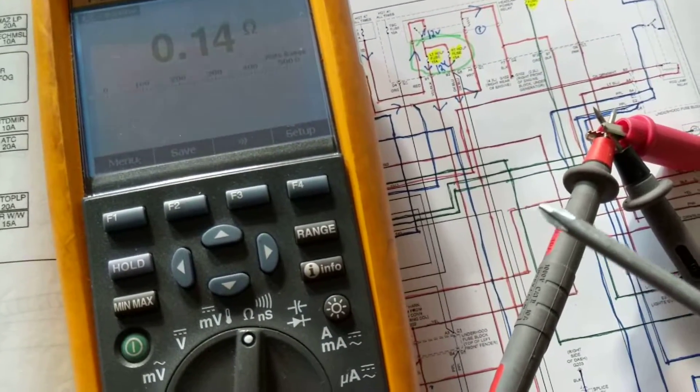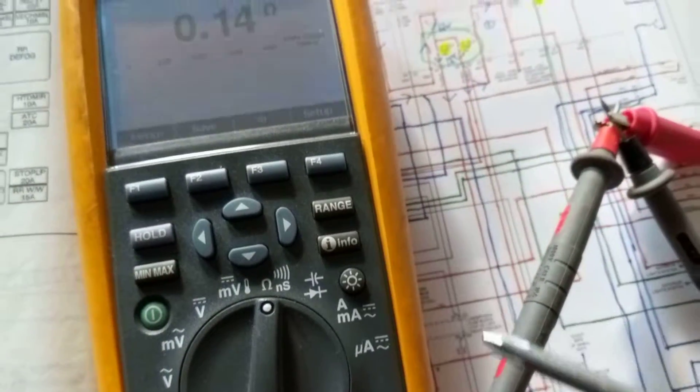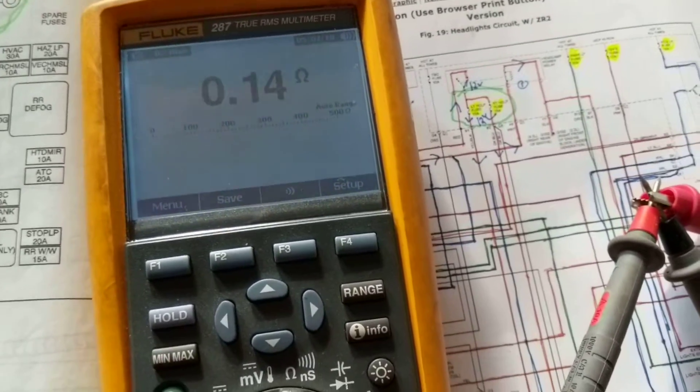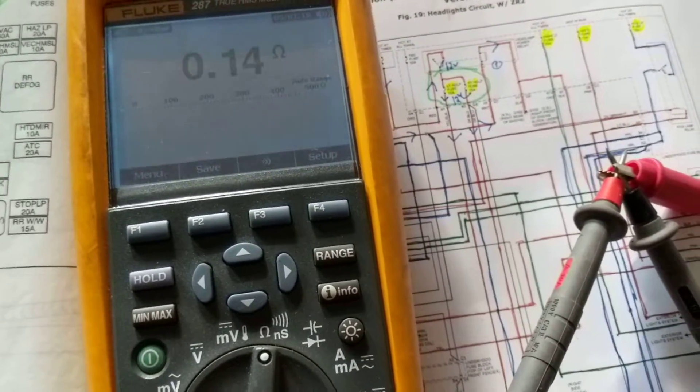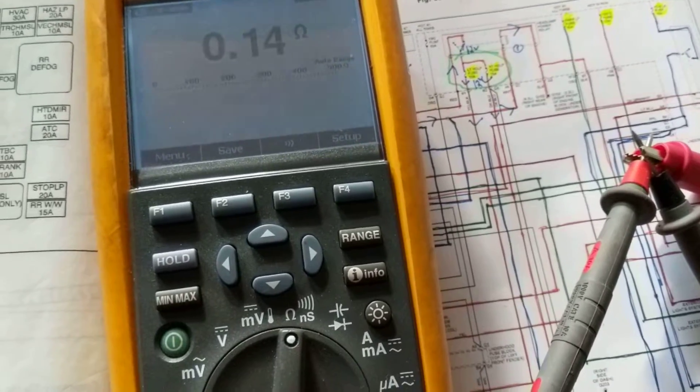First thing is you want to make sure that the leads are good. I shorted them together on the ohms scale, and as you see 0.14 ohms. That's very good. Now if it measures one ohm, that's not good.